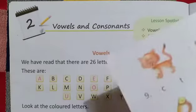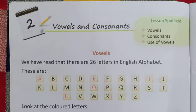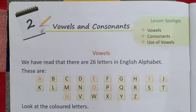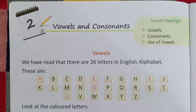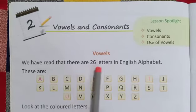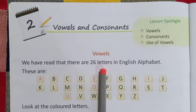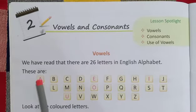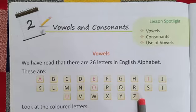Hare Krishna, good morning. Let's start our second chapter of English grammar and the name of our chapter is Vowels and Consonants. There are 26 letters in English alphabets, A to Z.